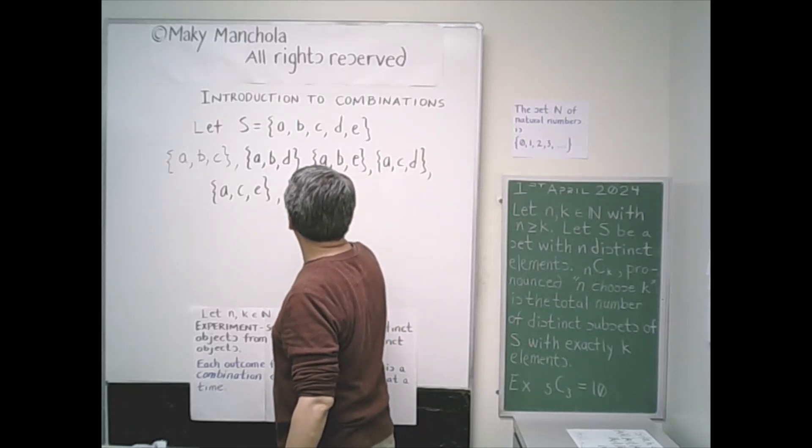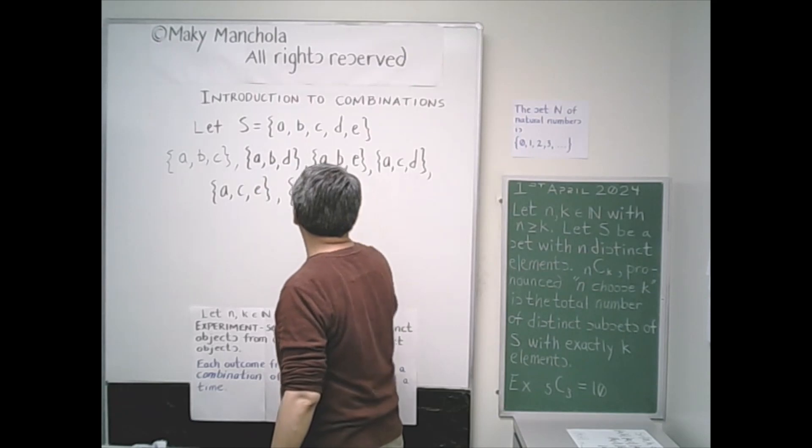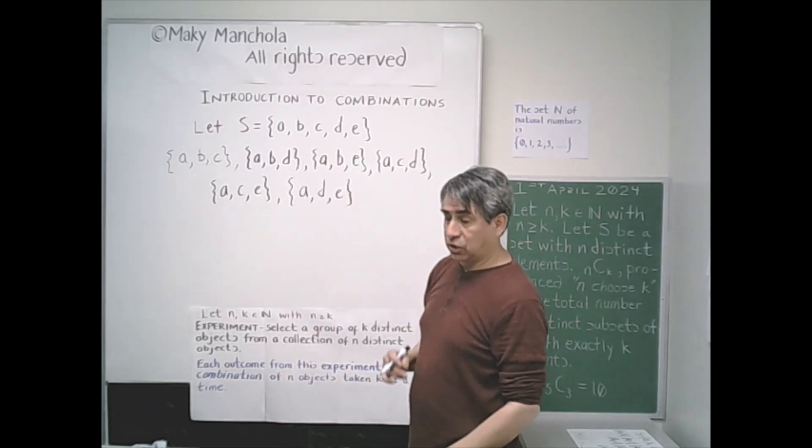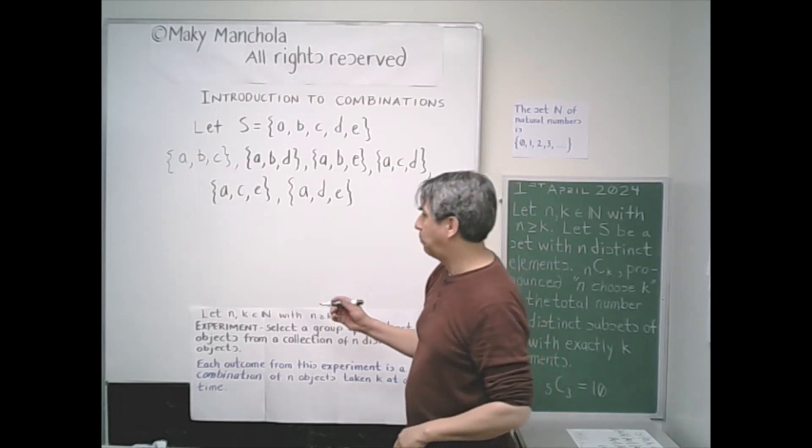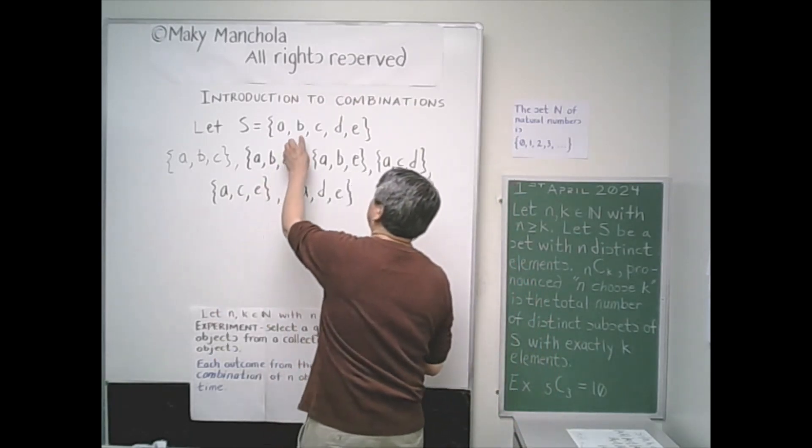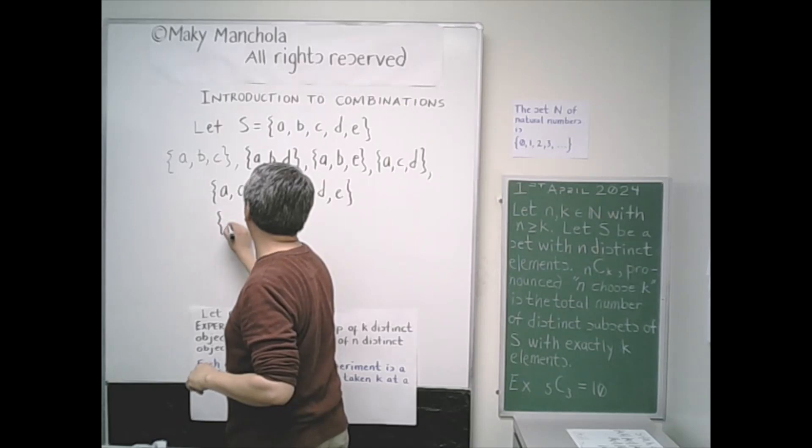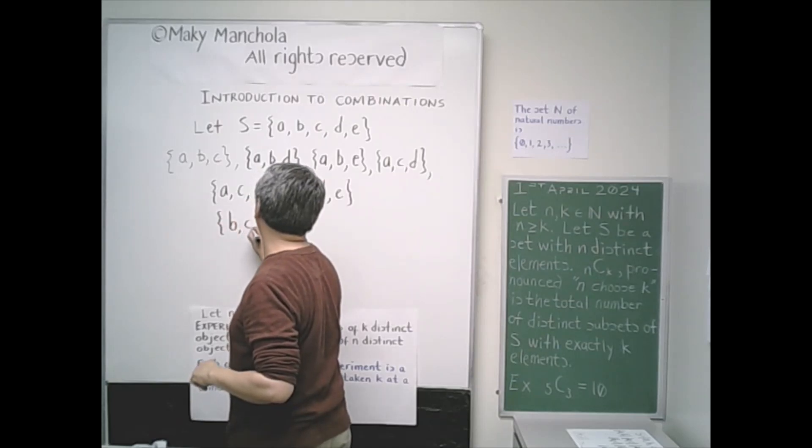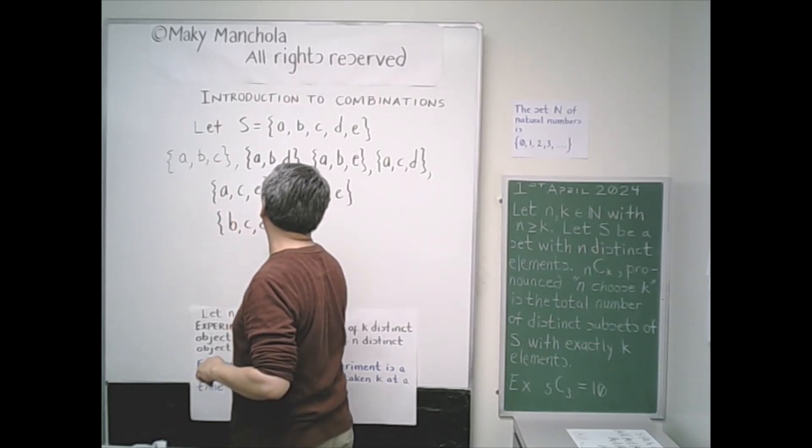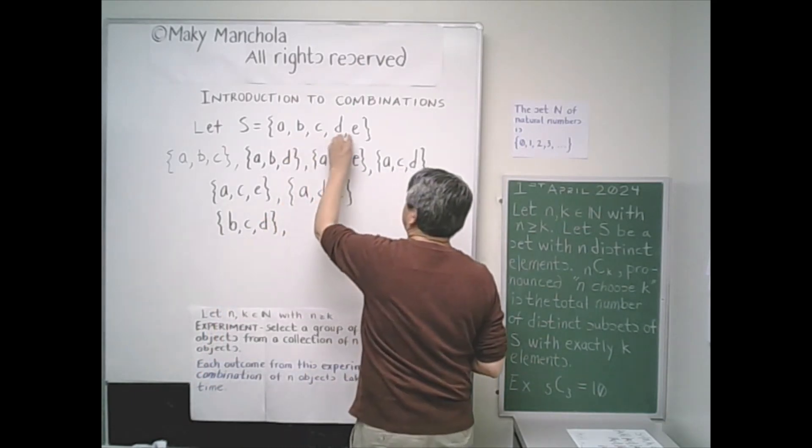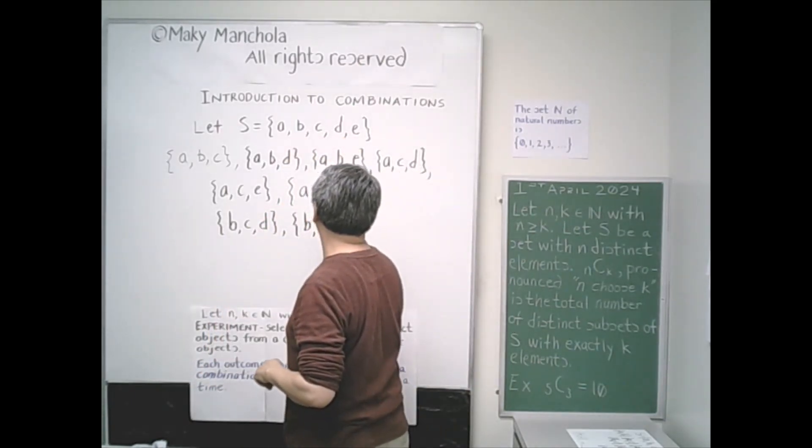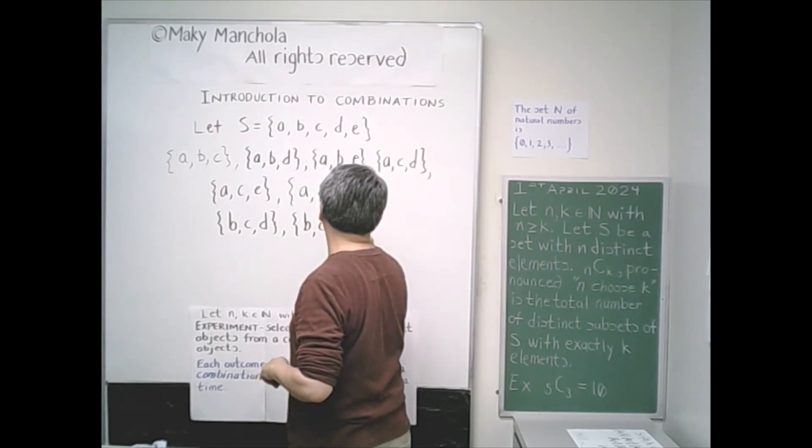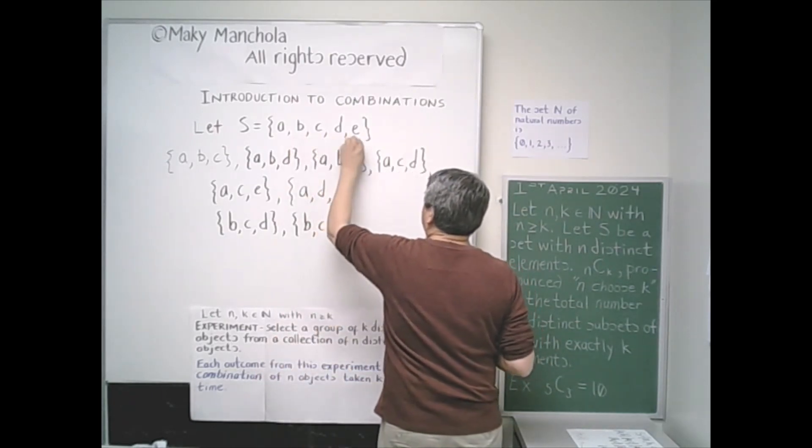Let's now list three element subsets of S that begin with B. So we have BCD, BCE, and BDE.